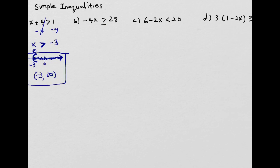Let's look at the next one. In order to isolate x, you're going to divide both sides by negative 4. Remember the difference between inequalities and equations: when you're dividing or multiplying by a negative number, you flip your inequality sign. So it was greater than or equal to, and now it becomes less than or equal to. Negative 4 over negative 4 is 1, so x is by itself, and 1228 divided by negative 4 gives negative 7.